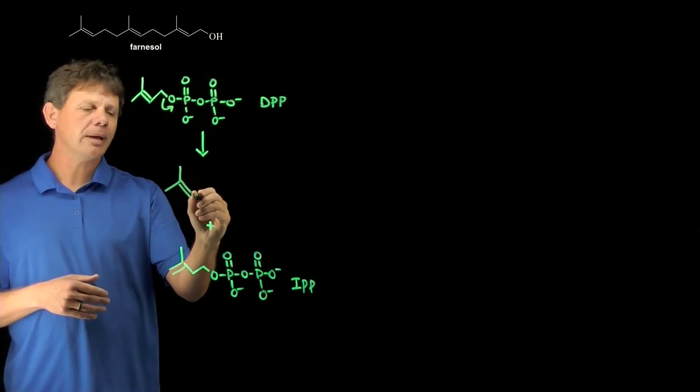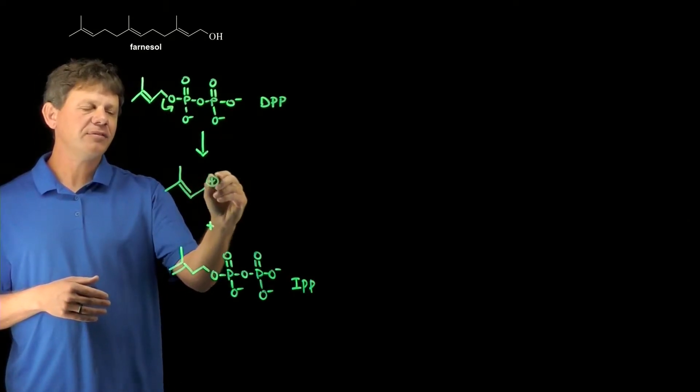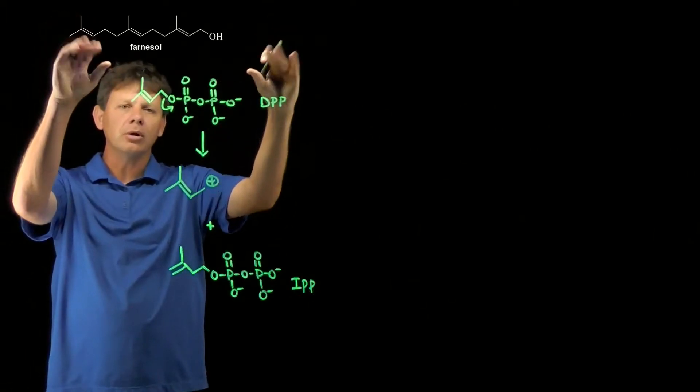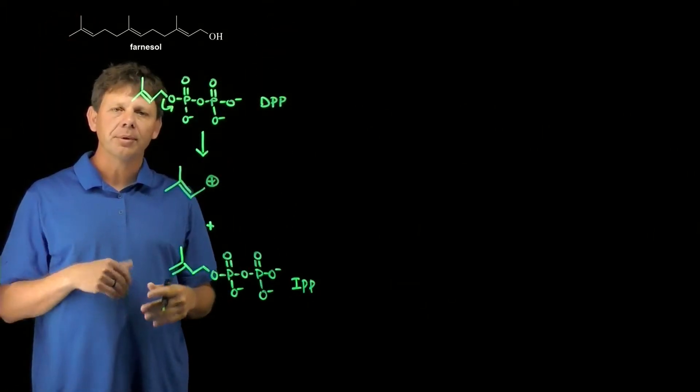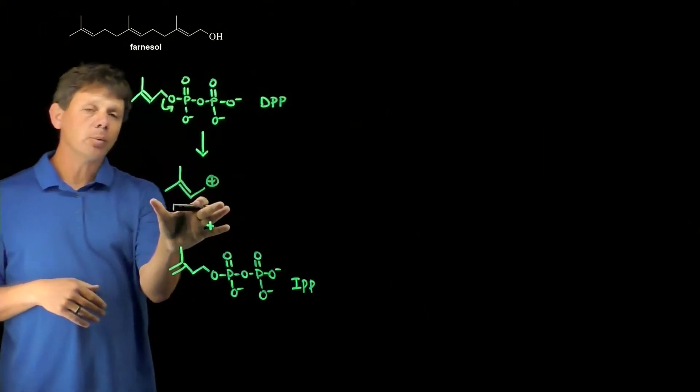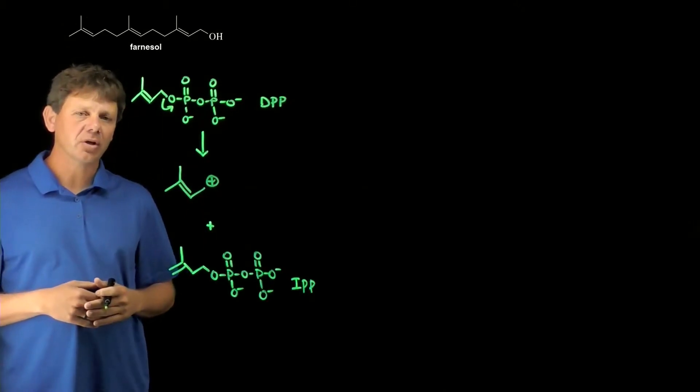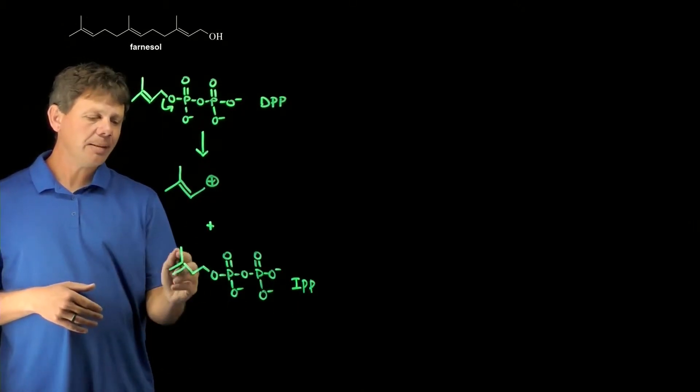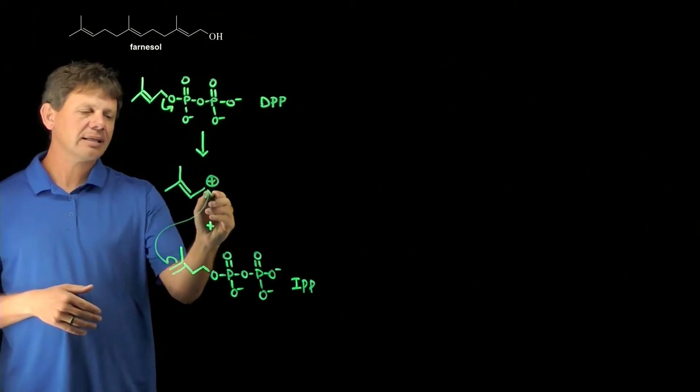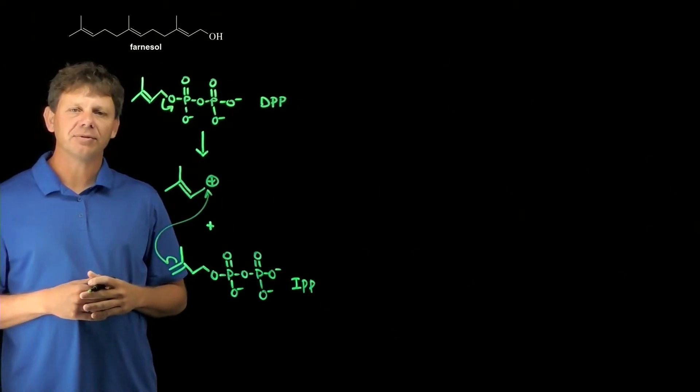In order to make a 15-carbon molecule from two 5-carbon molecules, we're going to have to combine them. When we make this carbocation, which is a good electrophile, the IPP alkene can attack that positive charge.